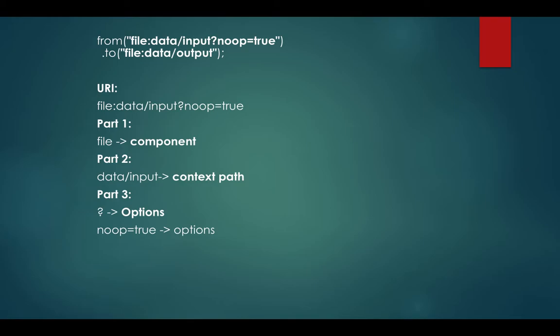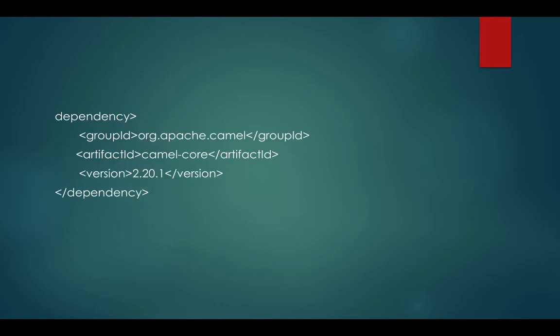Here we have provided 'noop=true', meaning do not perform any operation after you copy the files. Now let's get to the coding part. To facilitate the coding, I'm going to open IntelliJ and create a project. To build a Camel route we need this dependency in our pom.xml, because we are going to build a Maven project in IntelliJ. Let's go to IntelliJ and create a simple project first.